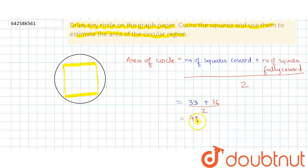So the area equals 33 plus 16 divided by 2, which is equal to 49 divided by 2, which is equal to 24.5 square units. So our required area is 24.5 square units. This is our answer.